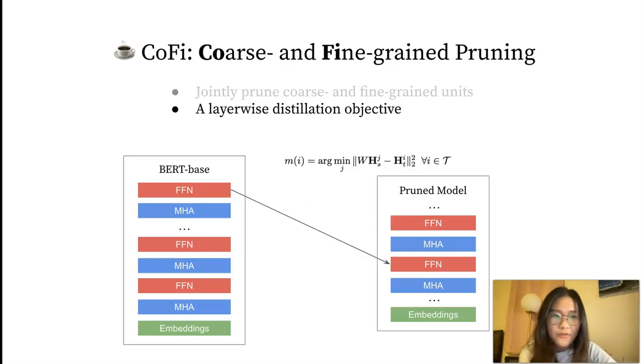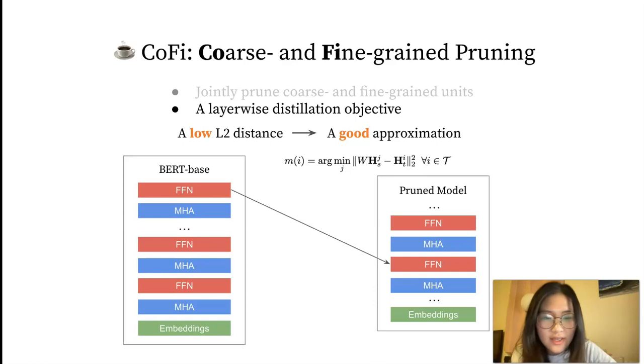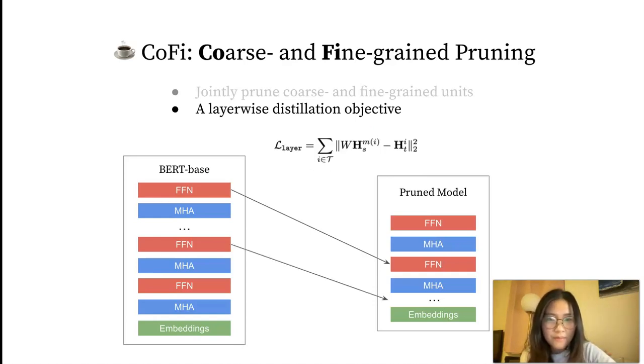For each teacher layer, we find the mapping to the student layer with the closest L2 norm. The intuition is that a small L2 distance shows a good approximation of a student layer for the selected teacher layer. If a lower student layer matches a higher teacher layer, it indicates that the student layers above can be pruned. The final layer distillation loss is the sum of L2 distances between the selected layers and the corresponding student layers with the lowest L2 norm.